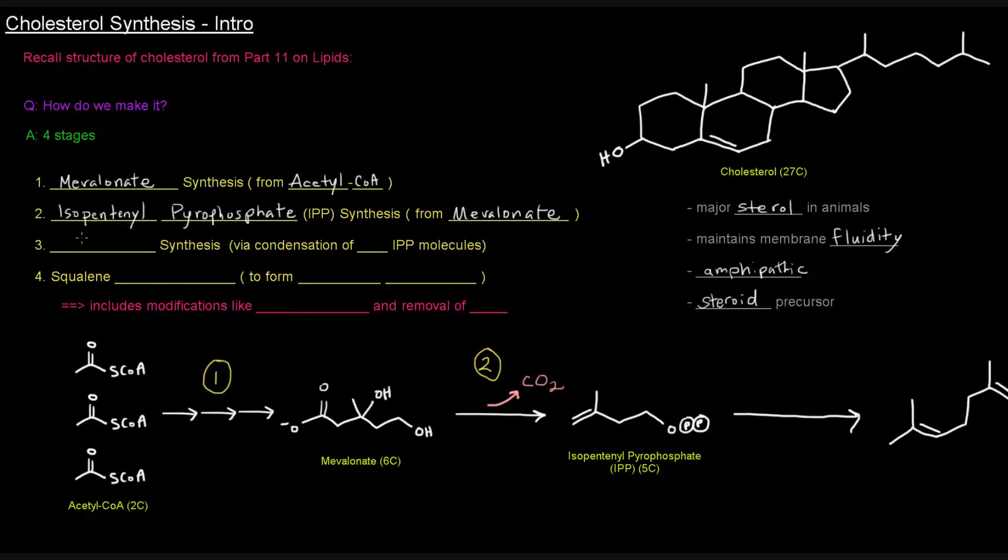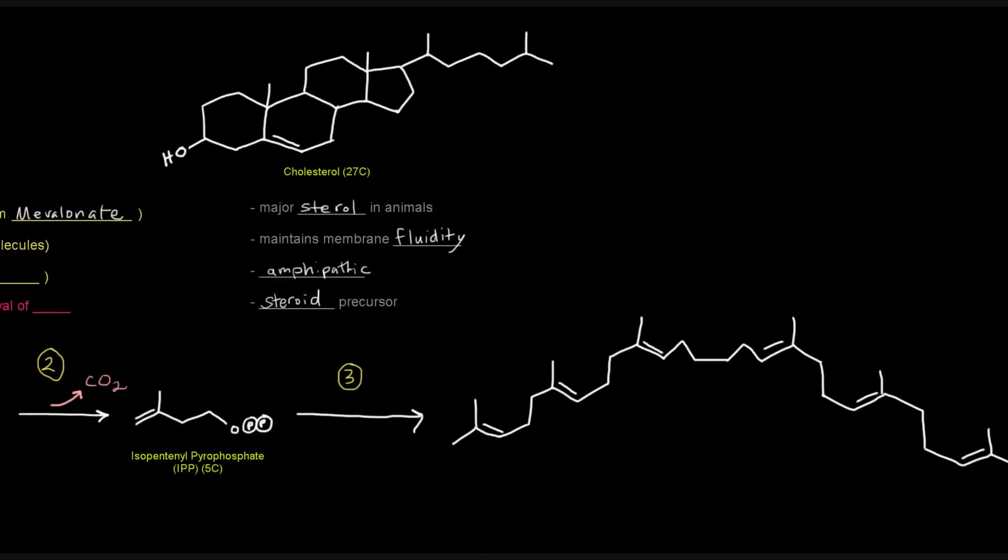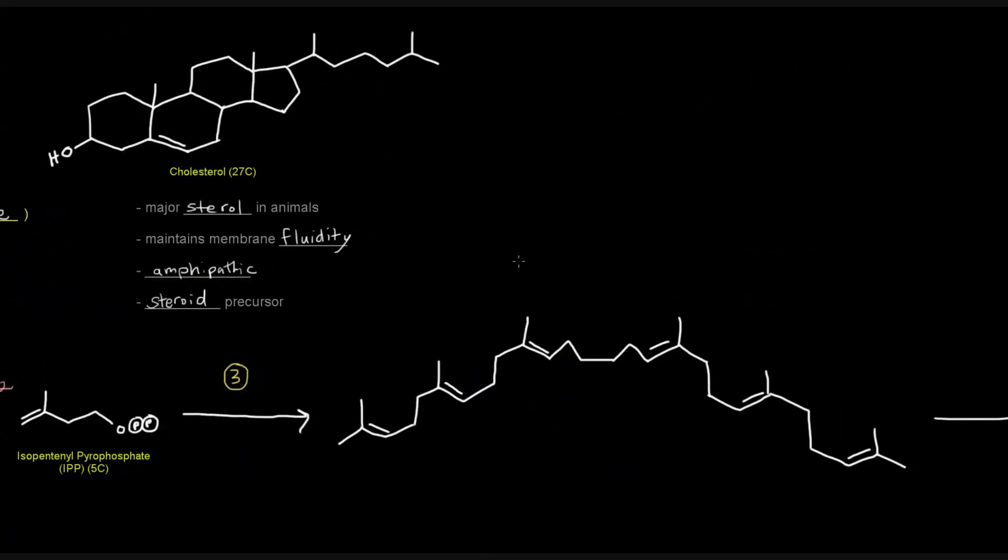Stage three is squalene synthesis, which is made from the condensation of six IPP molecules. So we're going to take six of these isopentenyl pyrophosphates in stage three, and we're going to combine them together to make this molecule called squalene. So squalene, given that there are six isopentenyl pyrophosphates that are going to be combined to make squalene, six times five gives you these 30 carbons. So that's stage three.